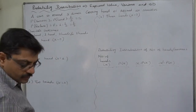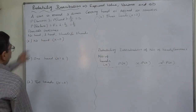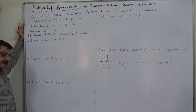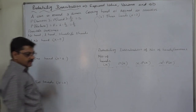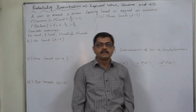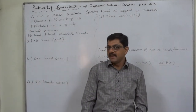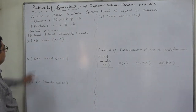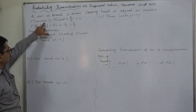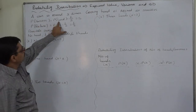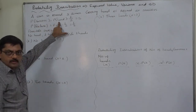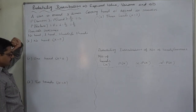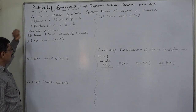Now, first of all, if a coin is tossed three times, that means there are three trials and the probability of success and probability of failure remain constant in each and every trial. The probability of success in each trial is the probability of a head, which is one by two, and probability of failure is one minus one by two, which is also one by two.